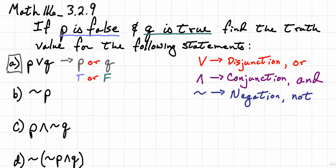And in a case of a disjunction, one or both have to be true. So since we do have one that is true here, that means the truth value of this statement is true.